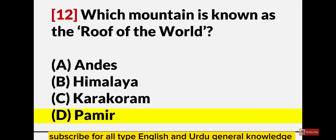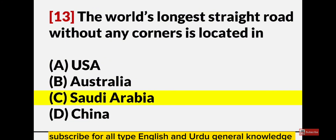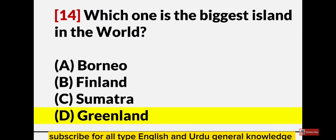Which mountain is known as the roof of the world? Pamir. The world's longest straight road without any corner is located in Saudi Arabia. Which one is the biggest island in the world? Greenland.